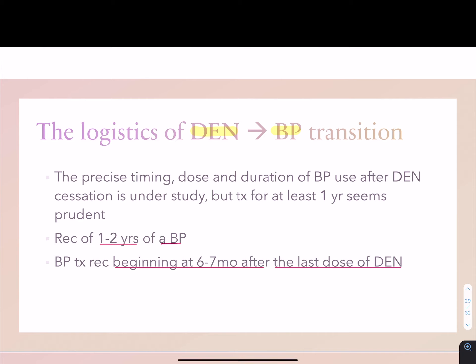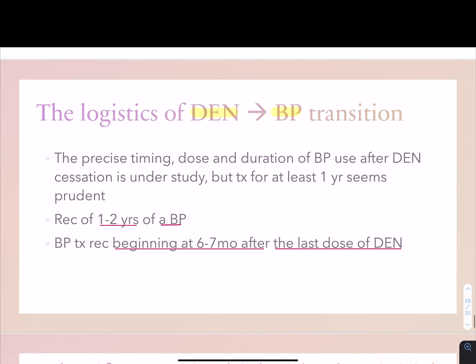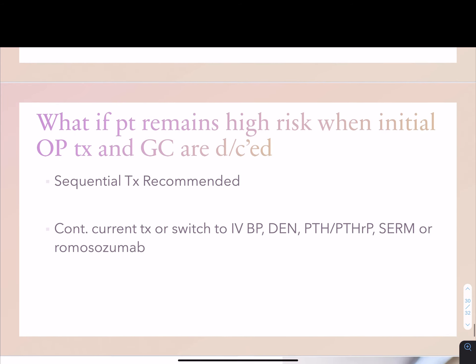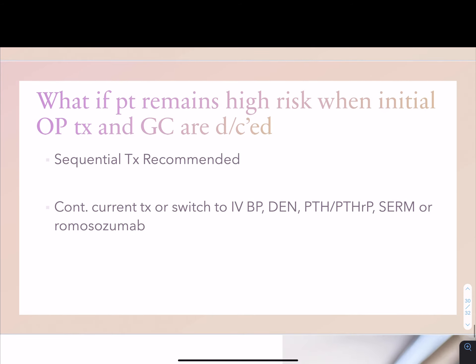If a patient remains high risk when initial osteoporosis treatment and glucocorticoid are discontinued, the guideline recommends sequential treatment — you can either continue with the current treatment or switch to IV bisphosphonate, denosumab, PTH, PTH-related peptide, SERM, or romosozumab.